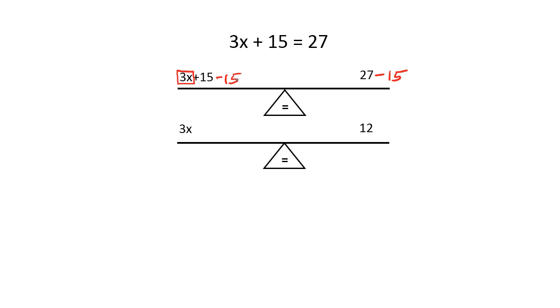Since 15 minus 15 is 0, all that's left on the left side of the teeter-totter is 3x. When I take 27 minus 15, I get 12. So now on my teeter-totter, I've got 3x on the left and 12 on the right. I have 3 times x. So to undo multiplication, I'm going to divide both sides by 3. When I divide both sides by 3, you can see on the left that I get 3 over 3. Well, 3 divided by 3 is 1. And on the right side, I have 12 divided by 3, which we know is 4.